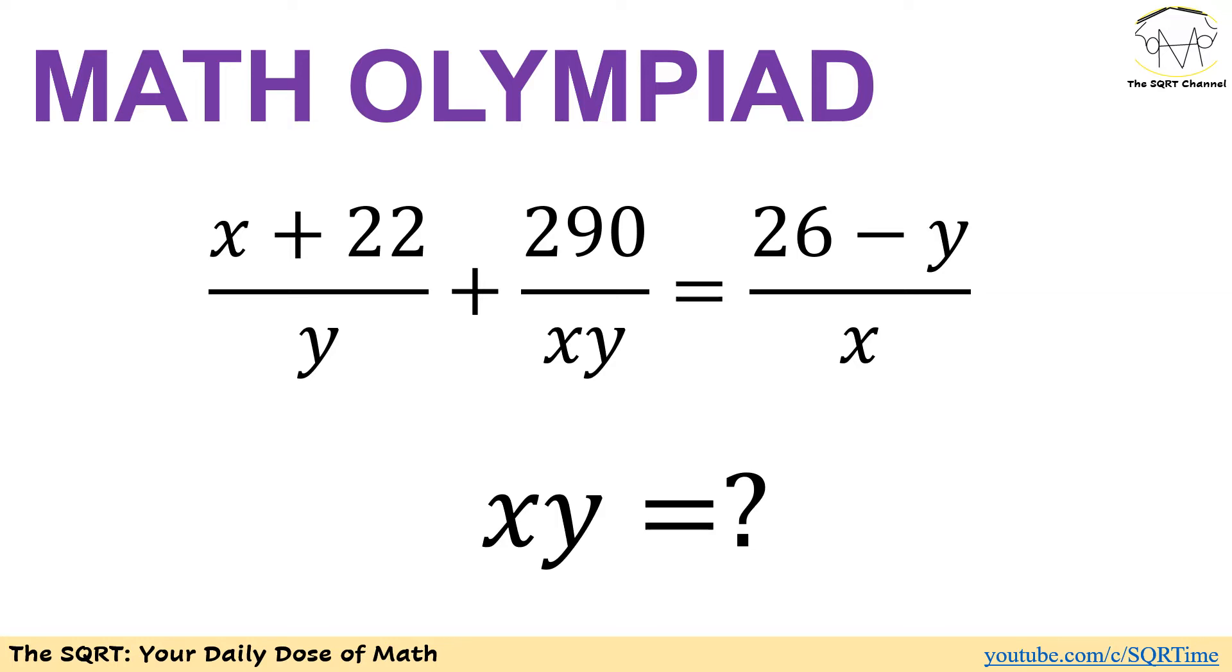In this problem we have (x + 22)/y + 290/(xy) = (26 - y)/x. We need to find x times y.